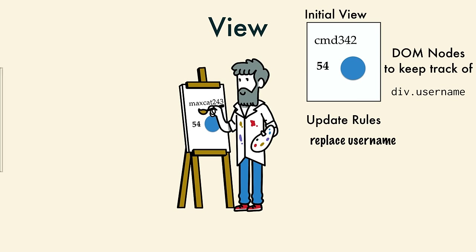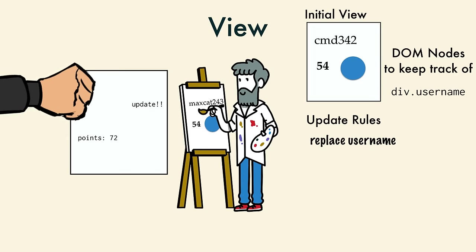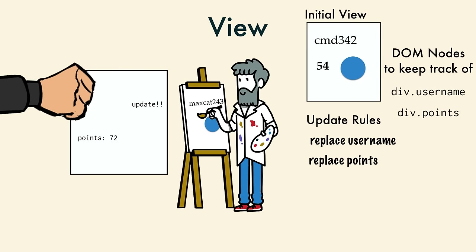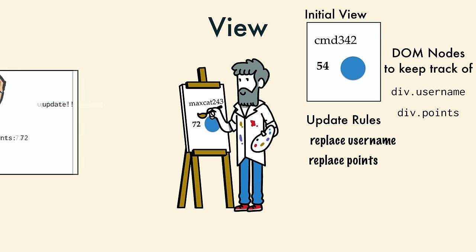Then the model sent the view another update. This time it was the points. The view added another update rule and started tracking the points div. Again, he updated the DOM in place.